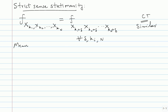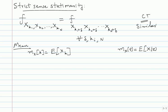The first order statistic is the mean. In the discrete time case: m_x(k) = E[x(k)]. In the continuous time case: m_x(t) = E[x(t)]. The expected value is over the distribution of x(k) or x(t). What is on the left-hand side? It will be a deterministic signal - a deterministic discrete time signal in one case and a deterministic continuous time signal in the other. The first order statistic is much simpler than the entire random process definition.